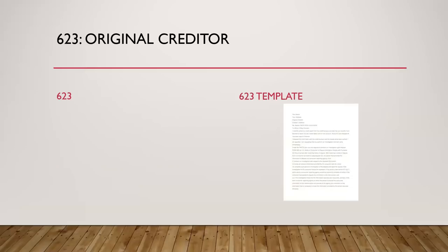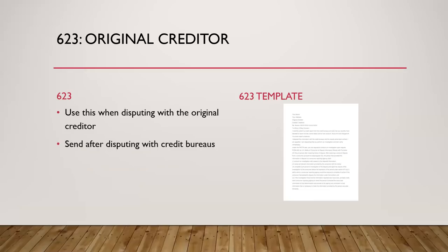When you're using the 623, it's to the original creditor — this is a template you can look up online. Use this one when disputing with the original creditor. You're going to send this after disputing with the credit bureau, because section 623 states that yes, you can dispute with the original creditor, but after the account has already been disputed with the credit bureaus. Don't wait 30 days — dispute with the bureaus, then three days later send your dispute to the original creditor.